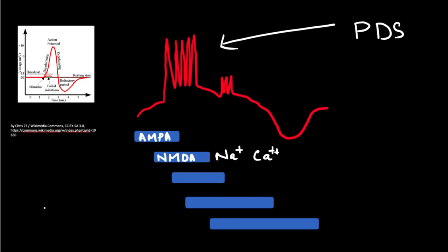This sustained depolarization opens up fast sodium channels. The rapid rush of sodium inside the cell leads to the hundreds of action potentials you see — this is the depolarization phase of the PDS. When potassium channels open, this starts causing repolarization. Another contributor to repolarization is the GABA-A receptor: when activated, it leads to entry of chloride ions inside the cell. Chloride is a negative ion, and its entry contributes to repolarization.